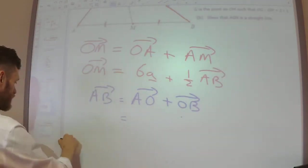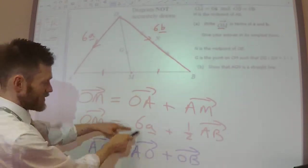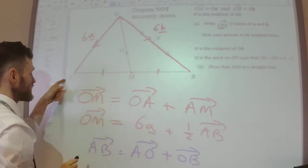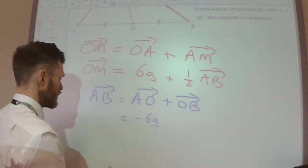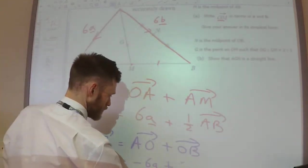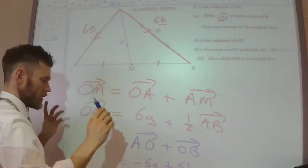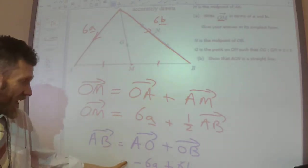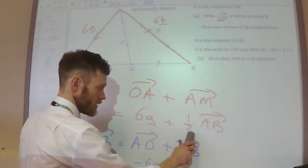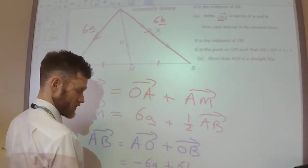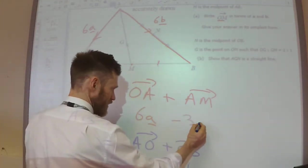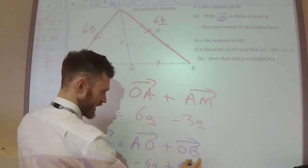Now, A to O, well, that's equal and opposite to O to A. It's equal and opposite, so it's going to be minus 6a. And then I'm adding the 6b. So if that is A to B, then half of A to B, half of this, is going to be minus 3a plus 3b.